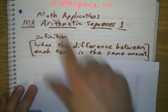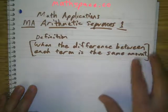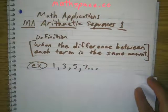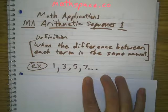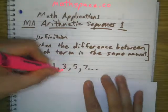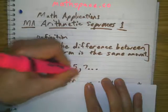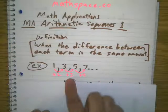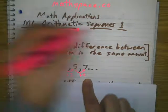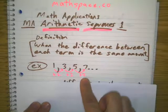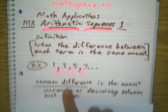What is an arithmetic sequence? An arithmetic sequence is when the difference between each term is the same amount. Let's look at an example: I've got 1, 3, 5, and 7. Notice how to get to the next one I had to add 2, add 2, add 2. Whenever I'm adding the same amount each time, that makes it an arithmetic sequence. If I'm adding different amounts each time, it's not an arithmetic sequence.